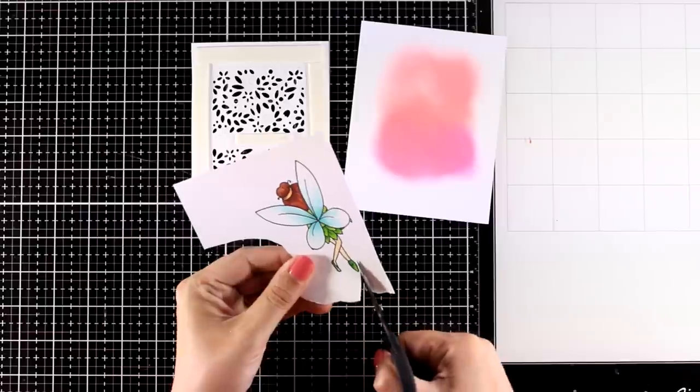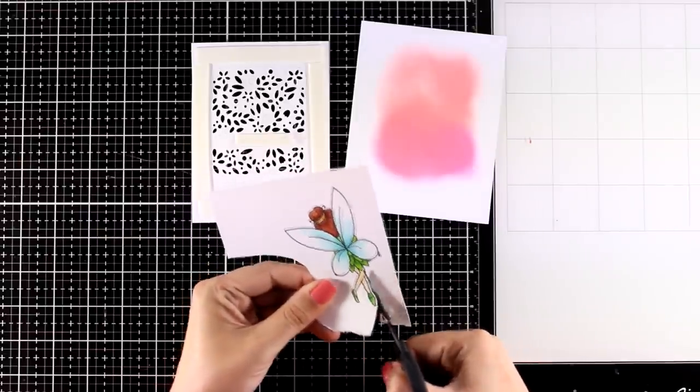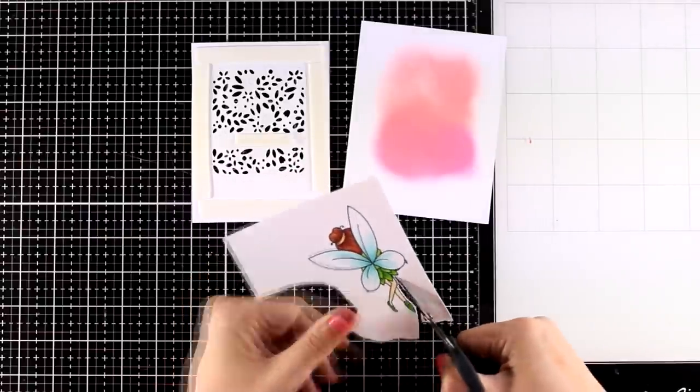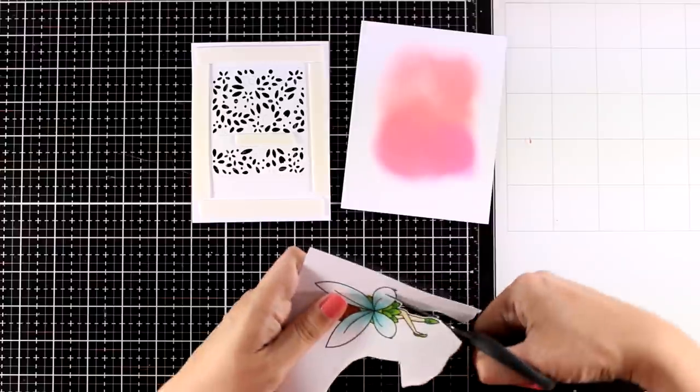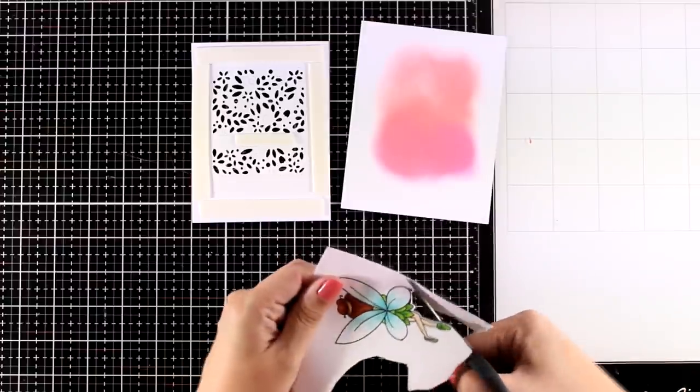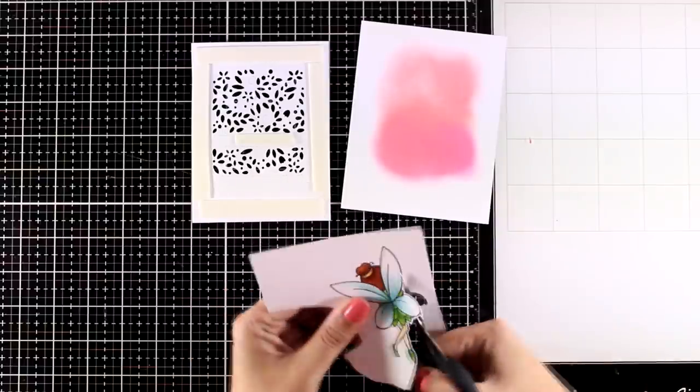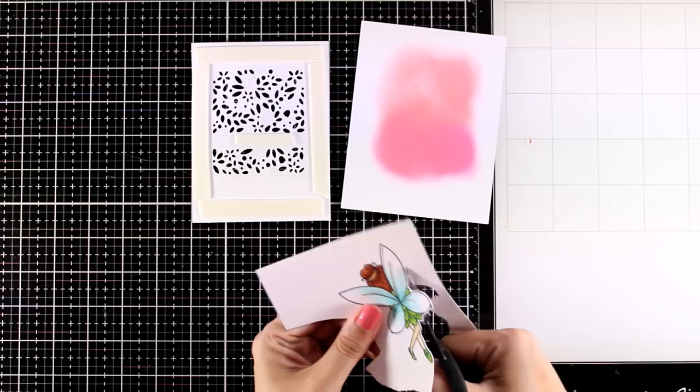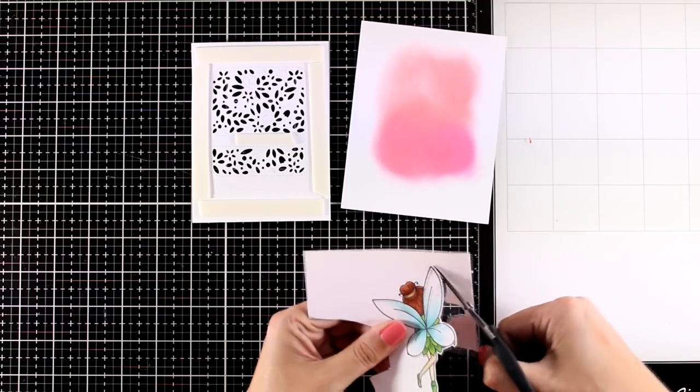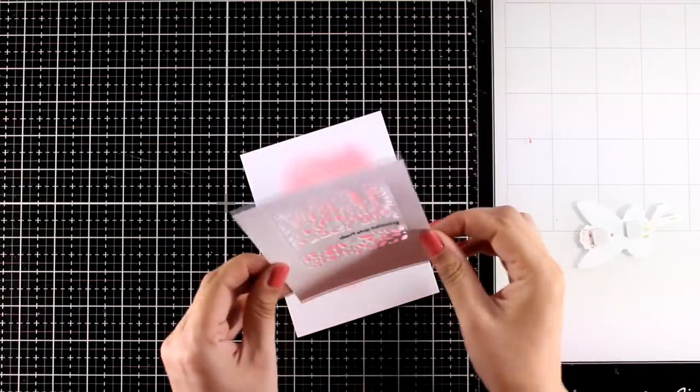For the fairy, I stamped it with alcohol friendly ink, I colored it with my Tri Blends, and now I'm using my scissors to cut it out. Again, there are matching dies for this stamp set so you can use that if you don't like fussy cutting.